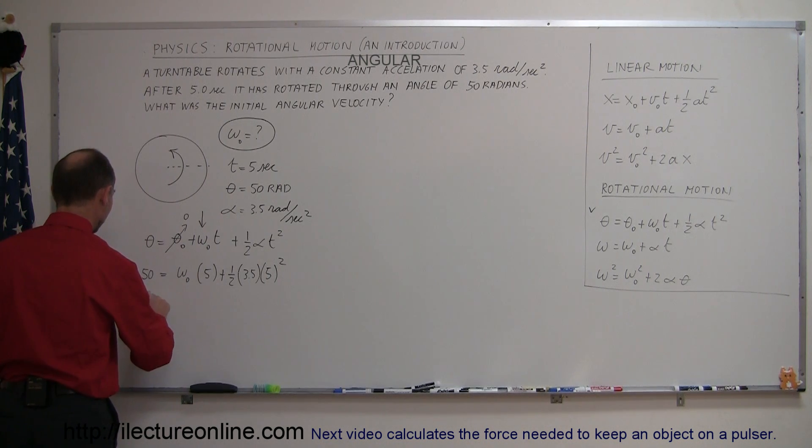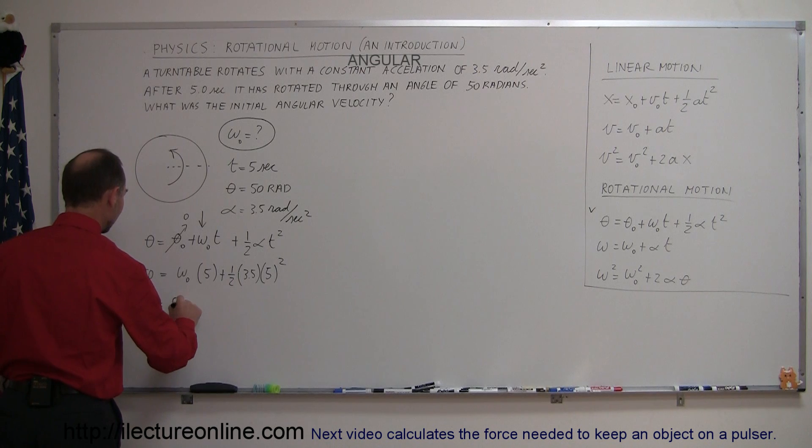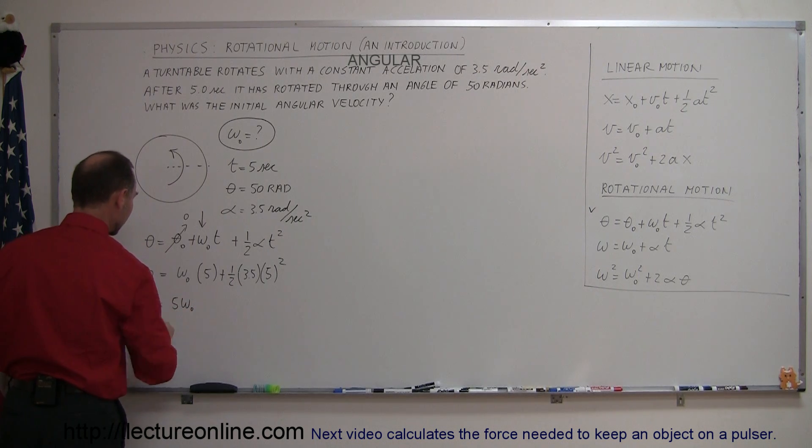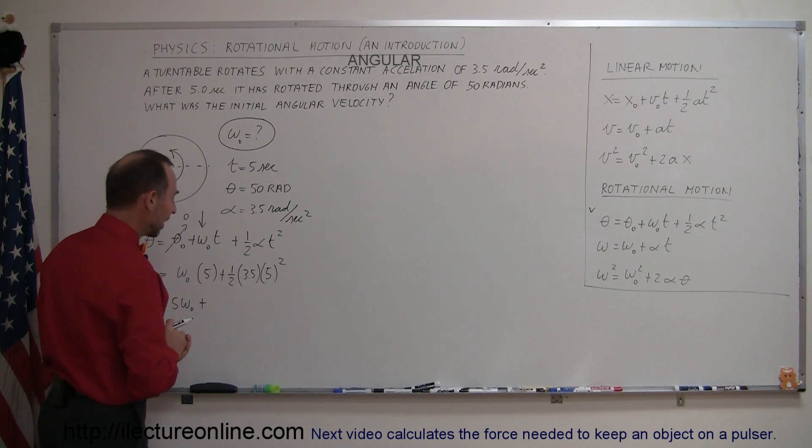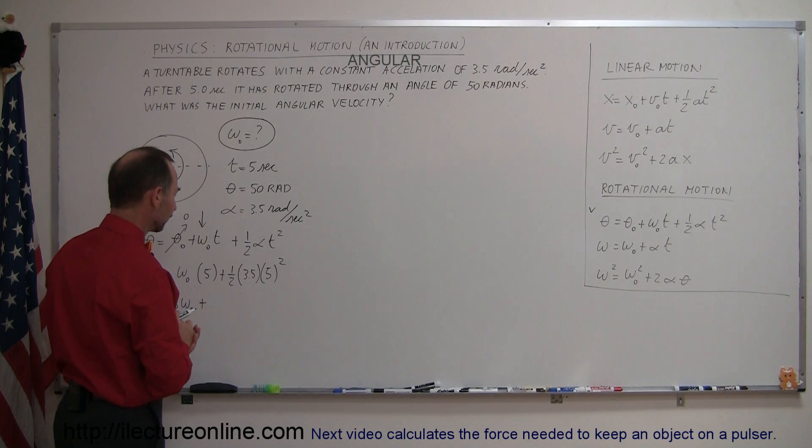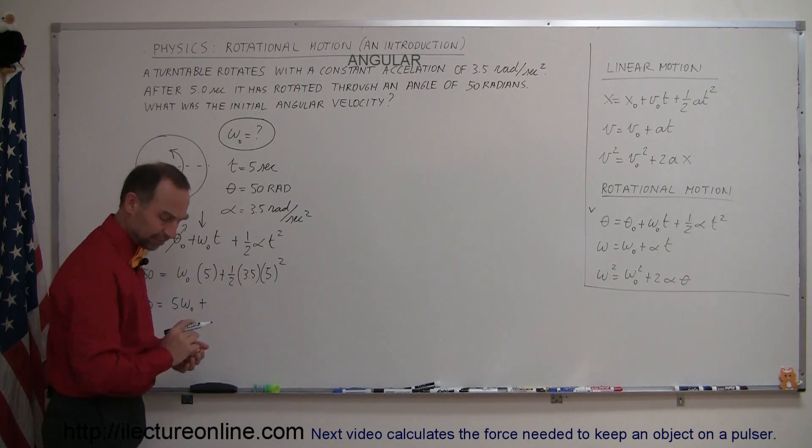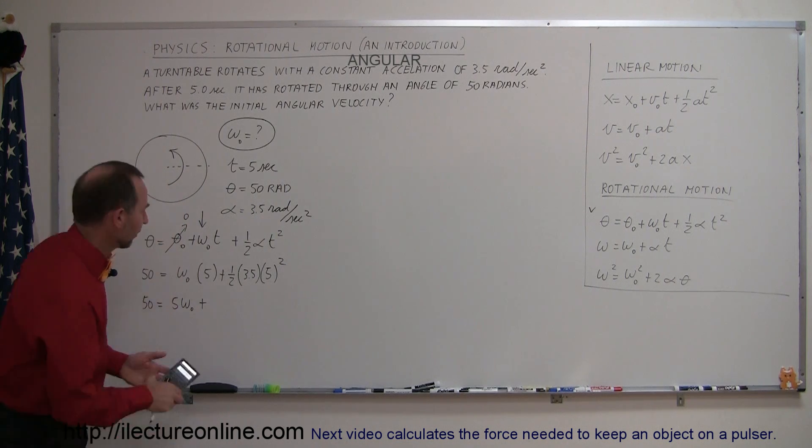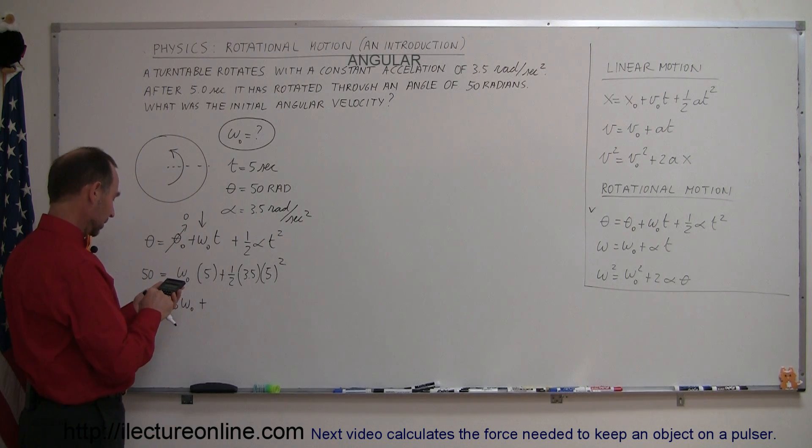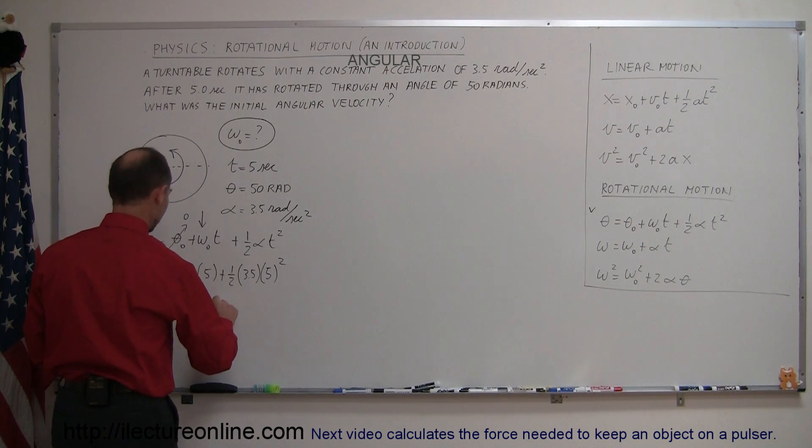So cleaning things up a little bit, we have 50 equals 5 omega sub naught plus one-half times 3.5 times 5 squared, which is 25. Let me grab a calculator for that. So we have 25 times 3.5 divided by 2, we get 43.75.